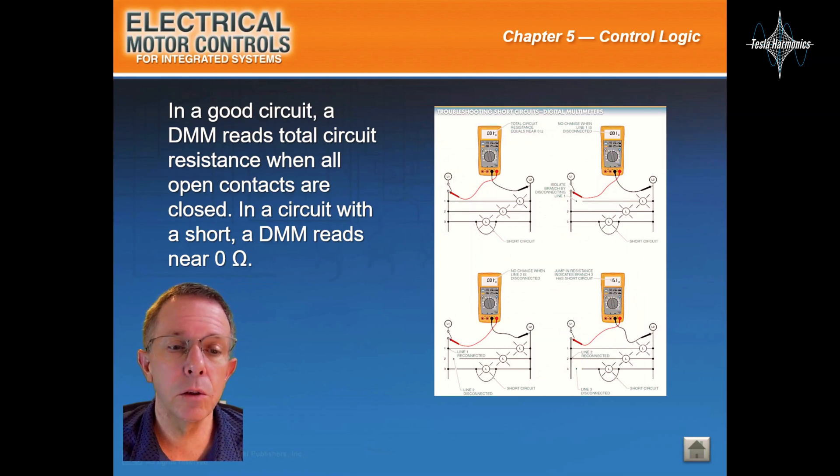In a good circuit, a digital multimeter reads total circuit resistance when all open contacts are closed. In a circuit with a short, a digital multimeter reads near zero.